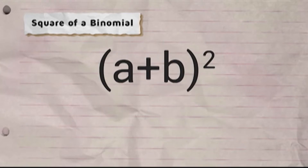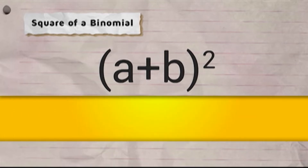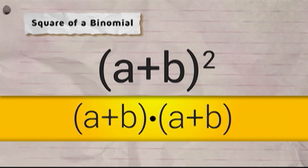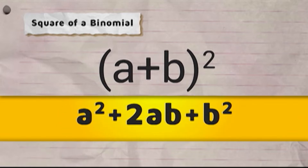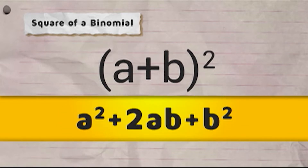Now, let us compute for the square of a binomial. Given the binomial, quantity A plus B raised to 2 equals quantity A plus B times quantity A plus B equals A squared plus AB plus AB plus B squared, which equals A squared plus 2AB plus B squared.